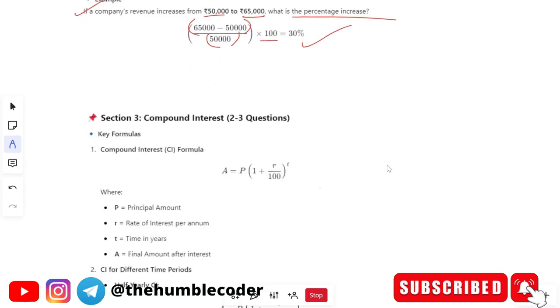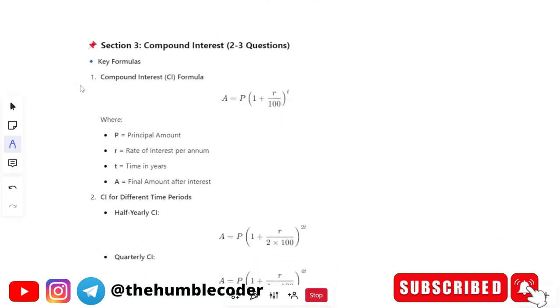Moving on to compound interest. So for compound interest the formula is a equals to p into 1 plus r by 100 whole to the power t.